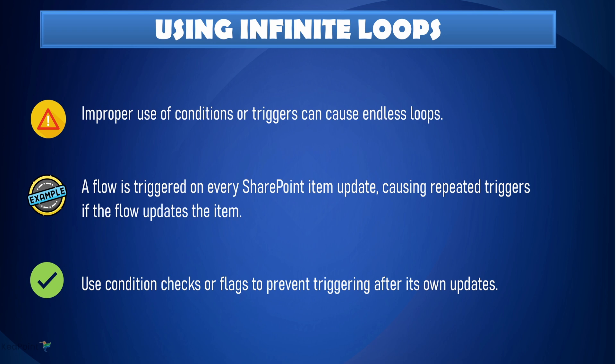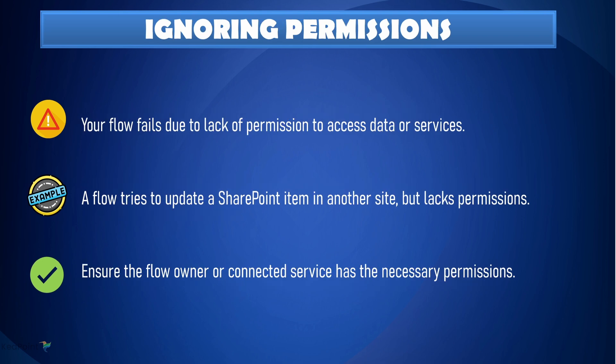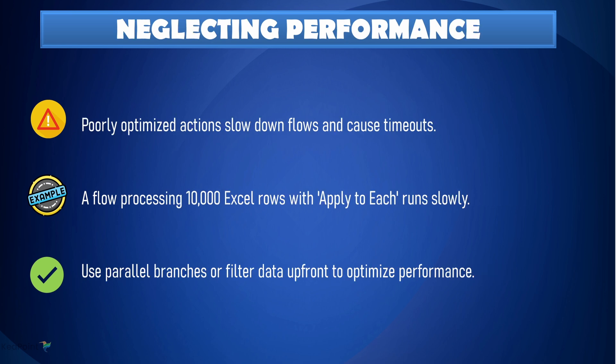Sixth: never ignore permissions. If your flow doesn't have the right permissions, it will fail when trying to access services like SharePoint or Outlook. For example, if a flow is meant to update a SharePoint item but it does not have the right permissions, it won't work. Always ensure that the user account or connection being used by the flow has the correct access.